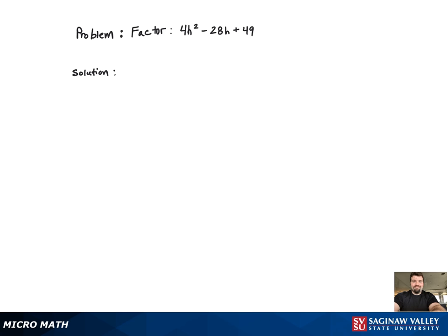As usual for a factoring problem, we want to break the trinomial up into two binomials. But both the constant term and the coefficient of the h squared term are non-prime numbers, which means that they have multiple factors that we could choose from.